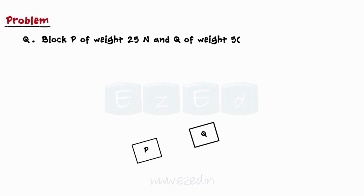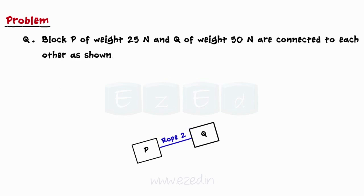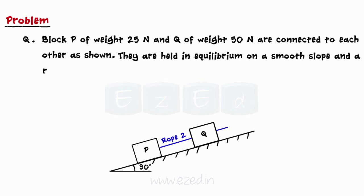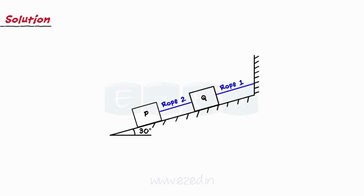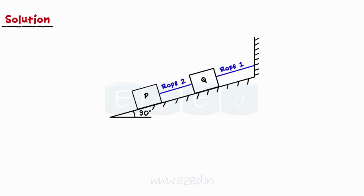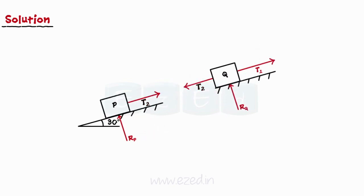Consider the following problem. Block P of weight 25 N and Q of weight 50 N are connected to each other as shown. They are held in equilibrium on a smooth slope with a rope tied parallel to the slope. Find the external support reactions and tension in the connecting rope. The system has two bodies, blocks P and Q, externally supported by smooth surfaces offering reactions RP and RQ, and rope 1 giving tension T1. The bodies are internally connected by rope 2. We select the x-axis along the slope and y-axis perpendicular to it.